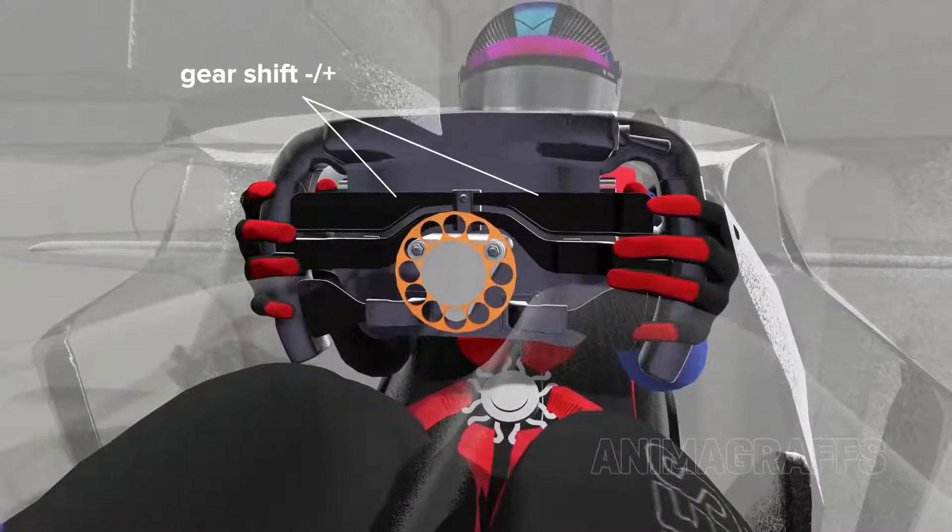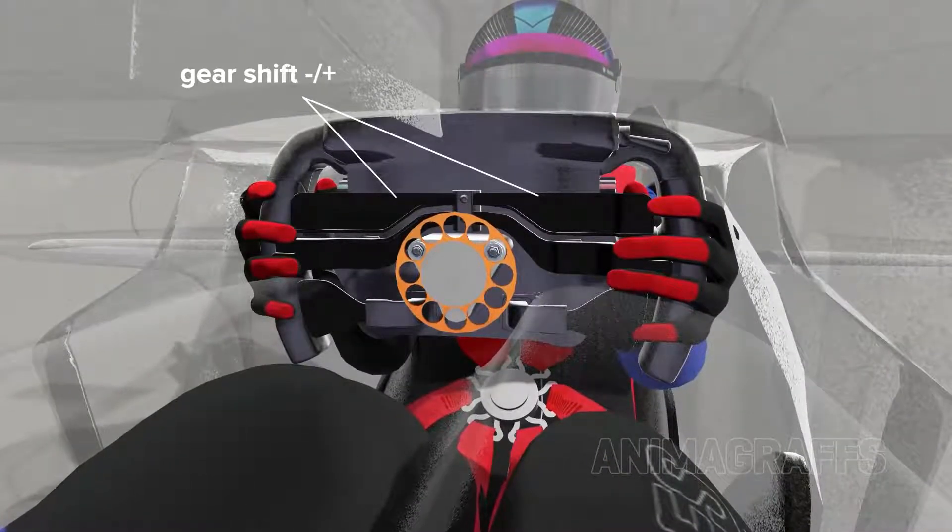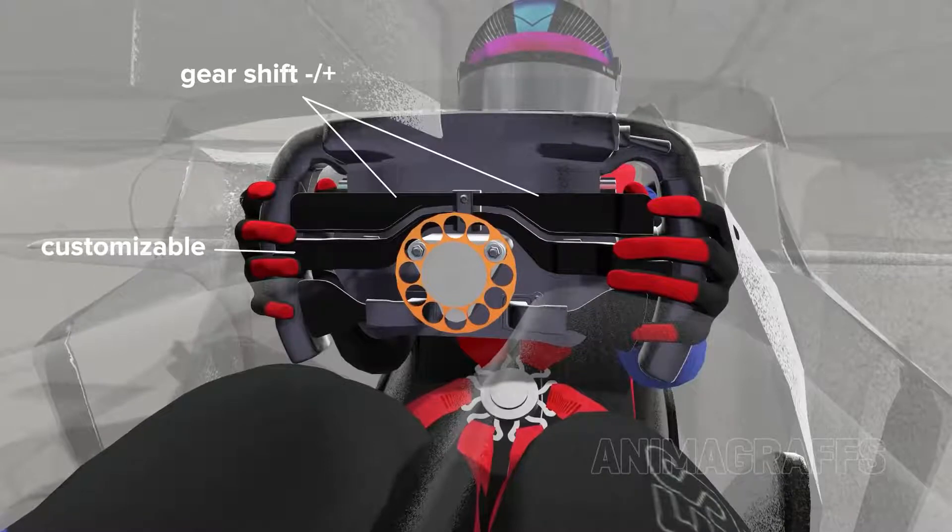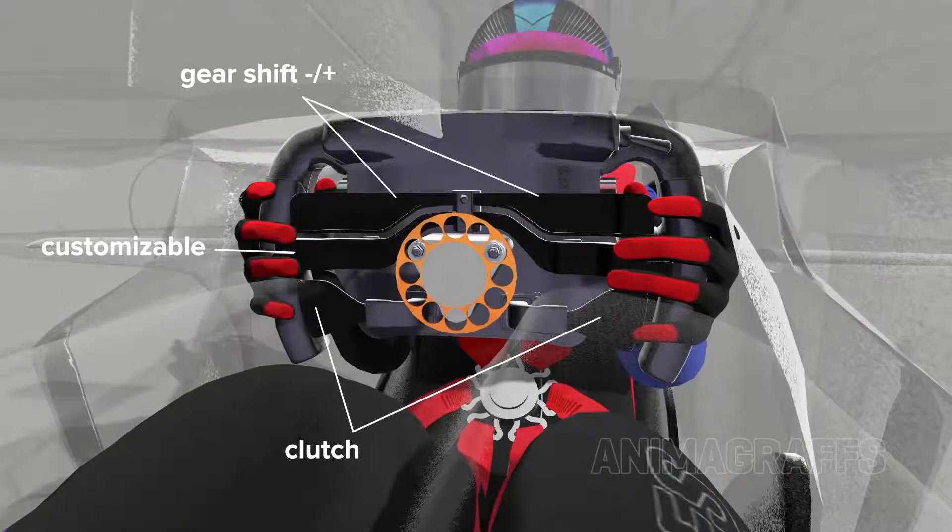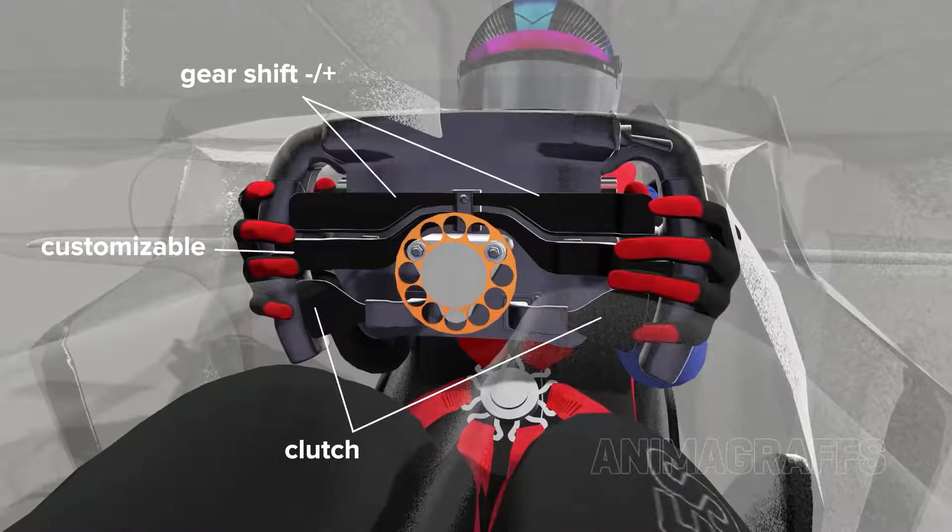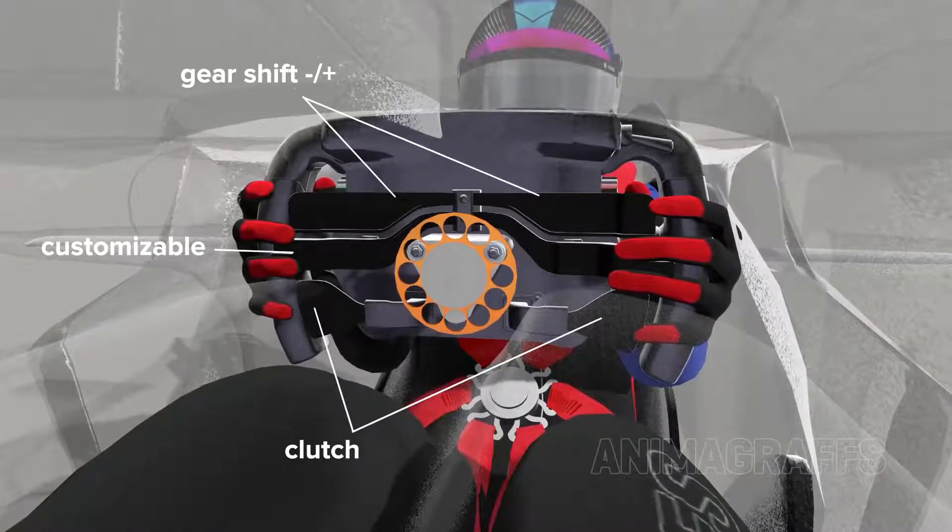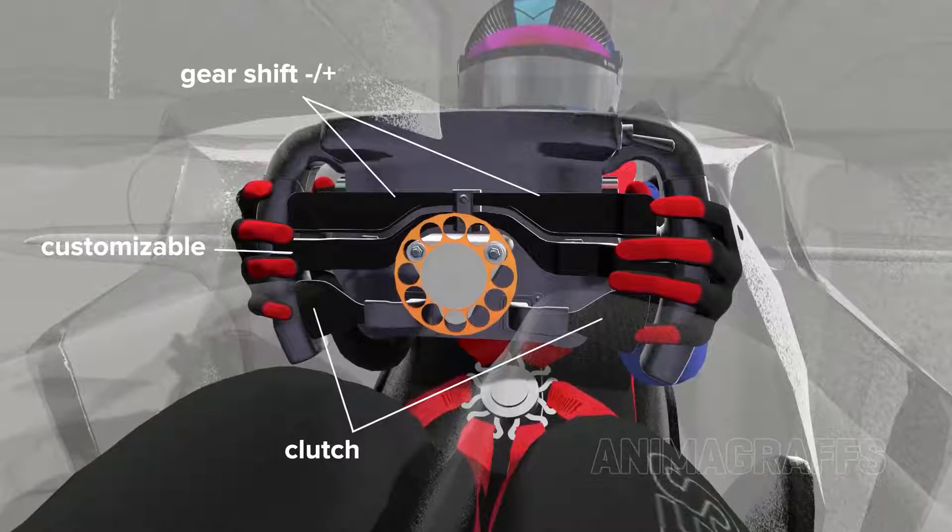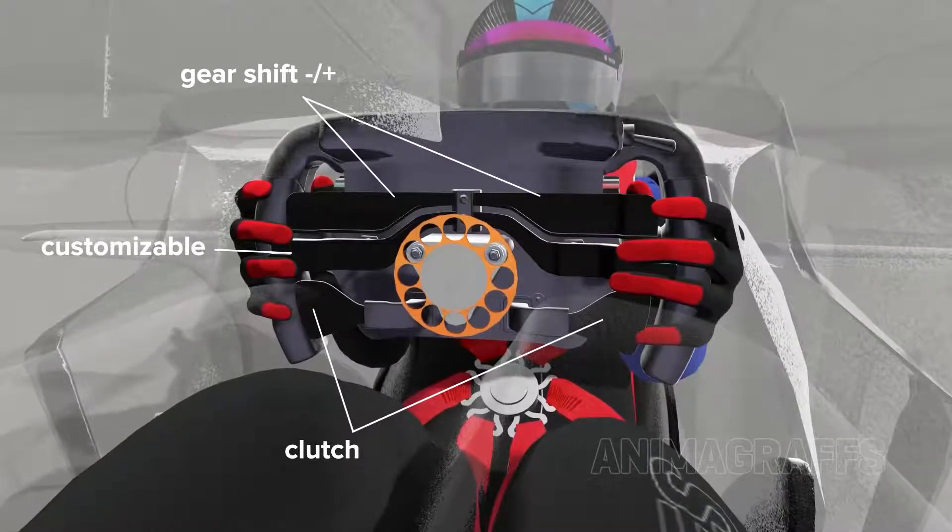The paddles at the back of the steering wheel handle gear shifting up or down, the middle paddles are driver customizable, and both bottom paddles actuate the clutch. Only one clutch paddle can be used for race start. Once in motion the clutch isn't needed for gear shifting.